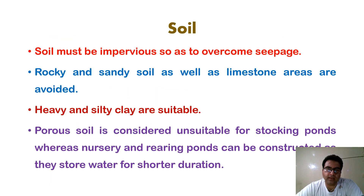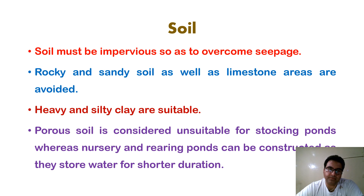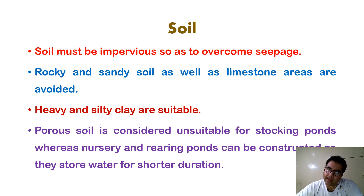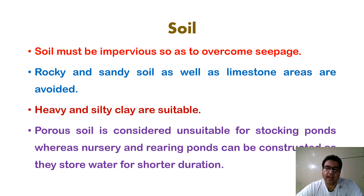The second most important consideration before construction of a fish pond is soil. The soil must be impervious so as to overcome seepage. Rocky and sandy soil as well as limestone areas must be avoided. Heavy and silty clay are regarded as suitable for fish pond construction. Porous soil is considered unsuitable for stocking ponds, whereas nursery ponds and rearing ponds can be constructed in porous soil since water is stored there for a shorter duration.